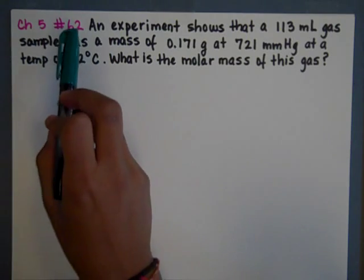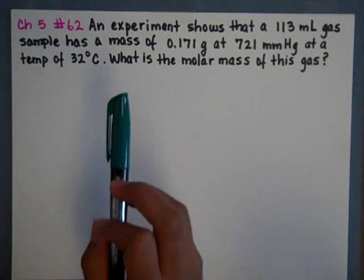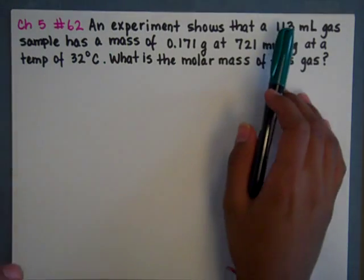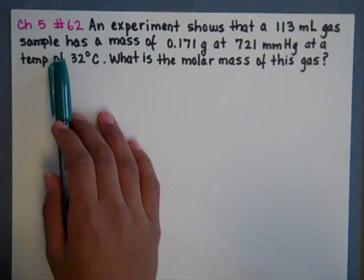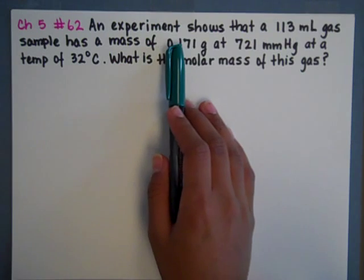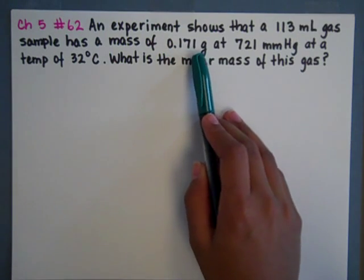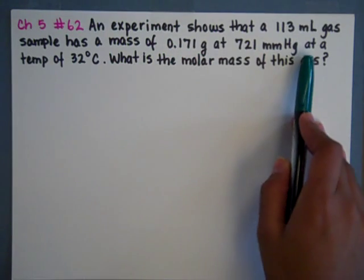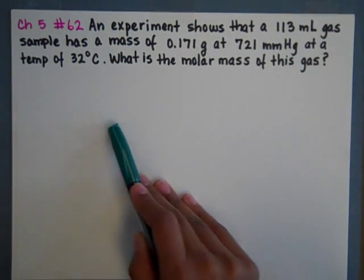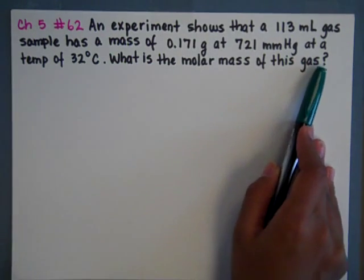This is number 62 and it says that there was an experiment and we found out that 113 milliliters of gas sample has a mass of 0.171 grams at a pressure of 721 mmHg at a certain temperature, and we want to know the molar mass of this gas.